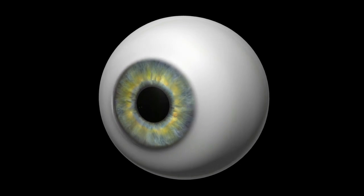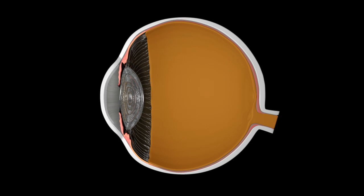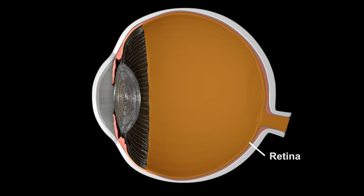The human eye is a complex organ that provides visual sensory information to the brain. Each part of the eye performs a specific function.